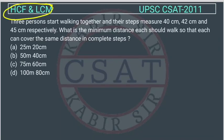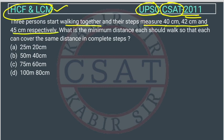This is a question on HCF and LCM asked by UPSC in the CSET paper of 2011. Three persons start walking together and their step measures are 40 centimeter, 42 centimeter, and 45 centimeter respectively. What is the minimum distance each should walk so that each can cover the same distance in complete steps?